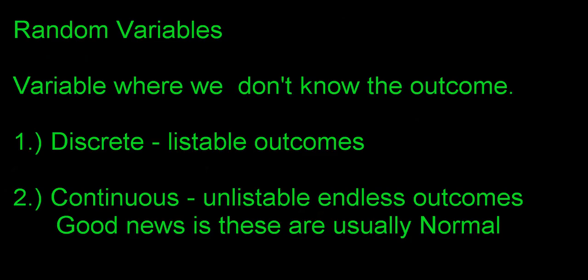A continuous random variable is where the outcomes are unlistable — it's almost endless. That's like how long that shower could take tonight. If I talk about minutes and include decimals, the shower could take 5.2 minutes, 5.3, 5.4, 10.6, 10.7 — it's literally an endless outcome. The good news is if your data follows a normal model it becomes really easy to use, so make sure you reference that normal model video.